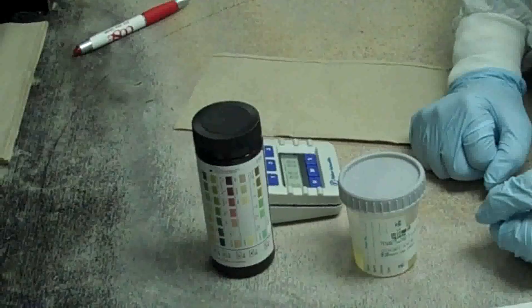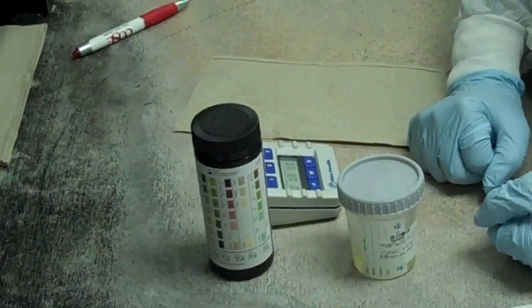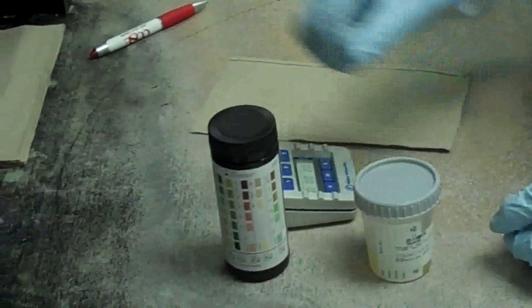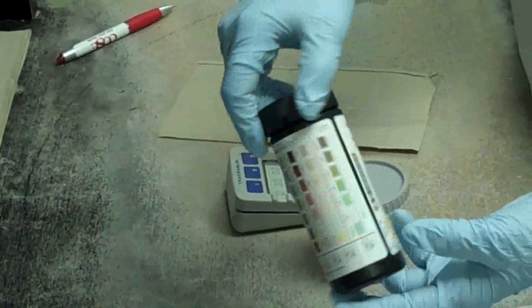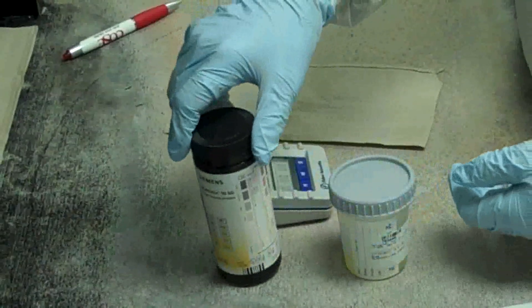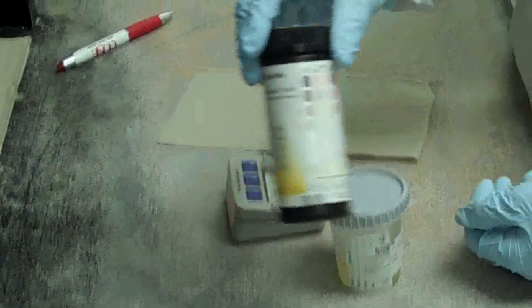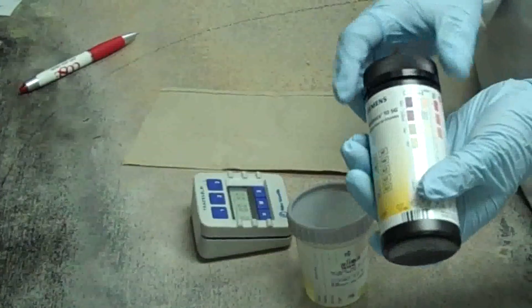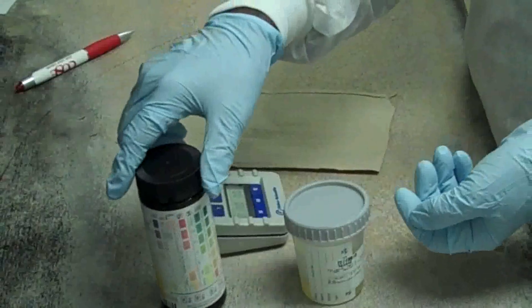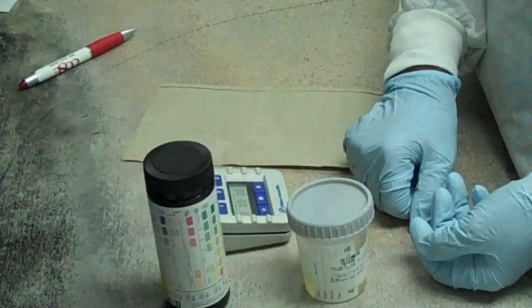Store MaltiStix urinalysis strip at room temperature in the original bottle only. Do not remove desiccants from the bottle. The desiccant is the drying agent inside the bottle. Do not use reagent strips beyond the expiration date.